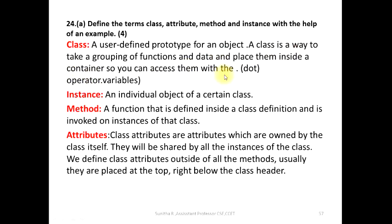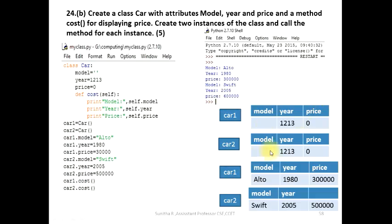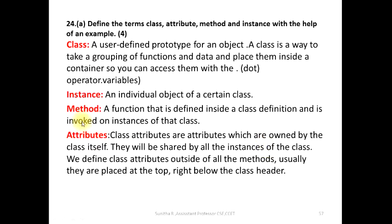So you can access them with the dot operator. Then, instance: an individual object of a certain class is called an instance. All instances occupy one size of memory. Car1 is in one location; car2 is in a different location — not the same object. Method: the function that is defined inside a class definition and is invoked on an instance of that class.